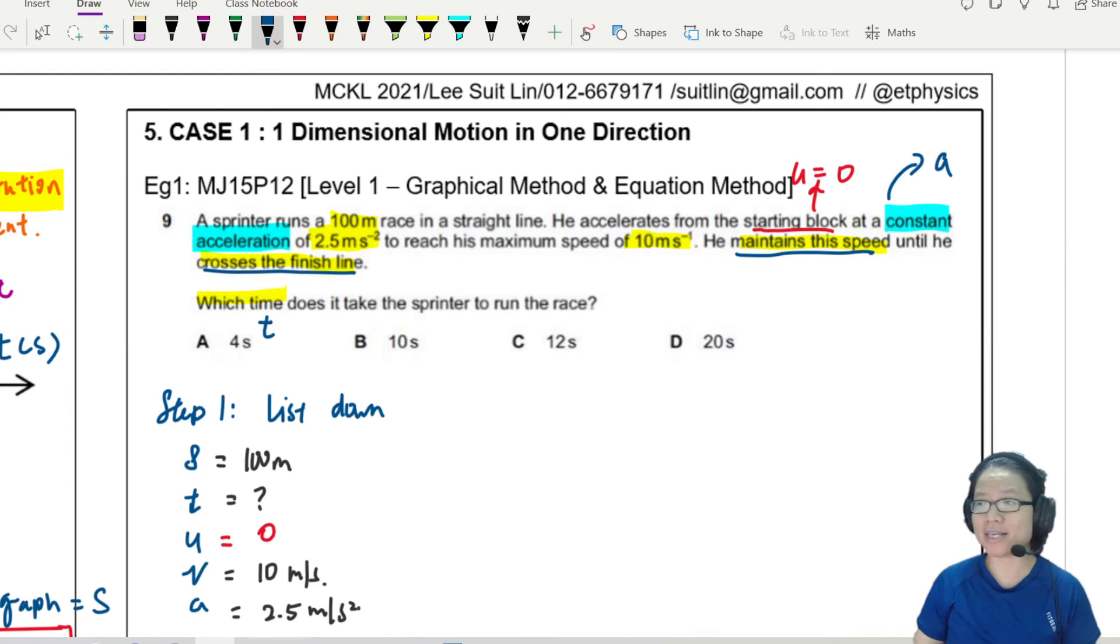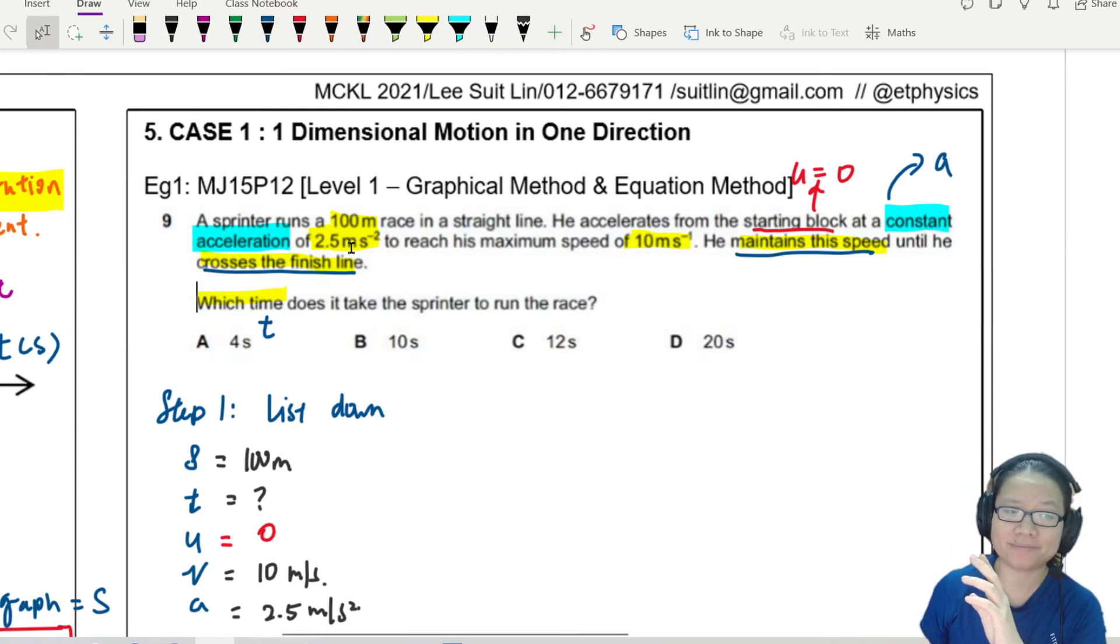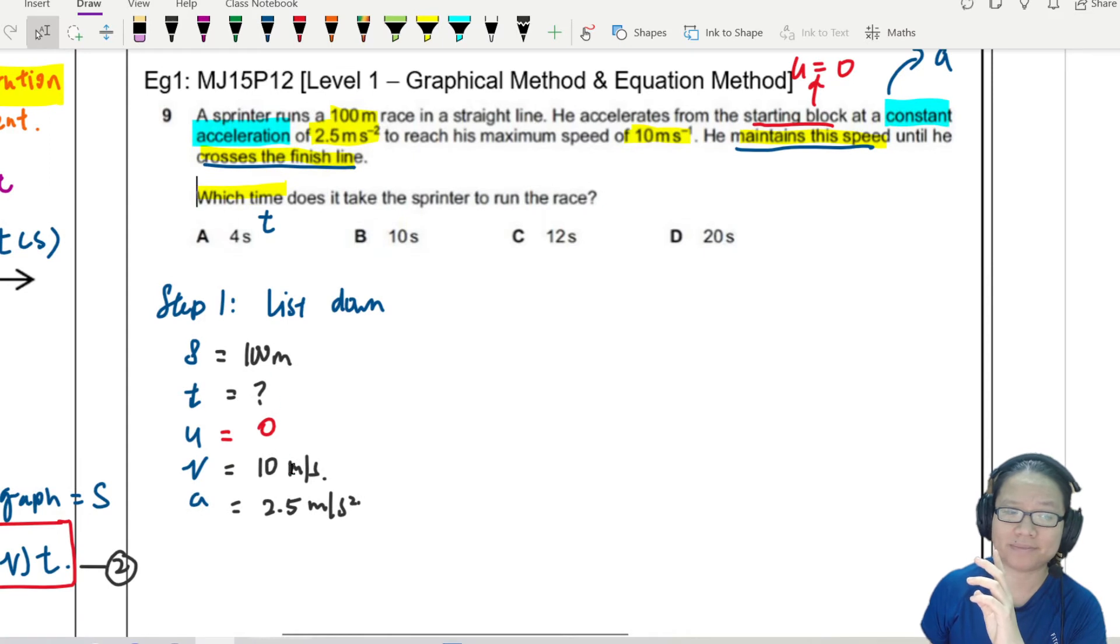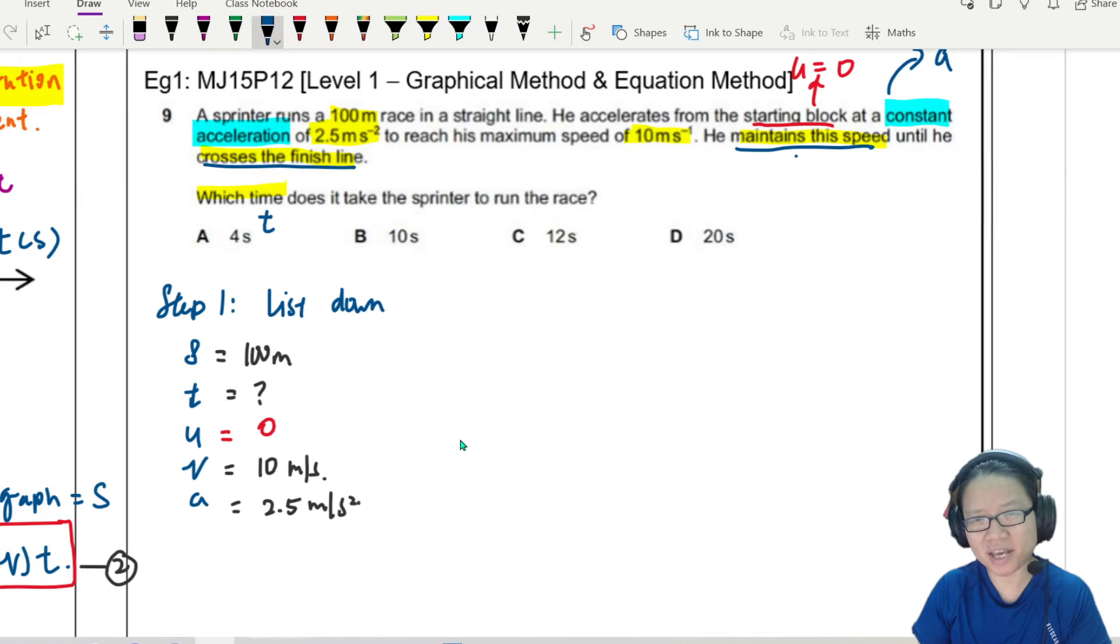So one by one first, let's see whether he can reach a speed of 100 meter in this period of time, I mean, in this acceleration. So oftentimes when you reach this kind of thing where you don't know if you maintain the speed, then A equals 0. So you kind of don't really know what is going on. Sketching out a graph quickly can help you.